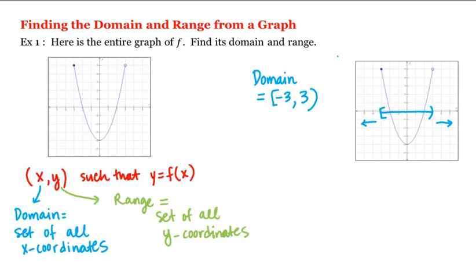Notice that this is an open parenthesis here because this point over here is open. In other words, x equal to 3 is not the x-coordinate of any point on that graph because of that open circle.